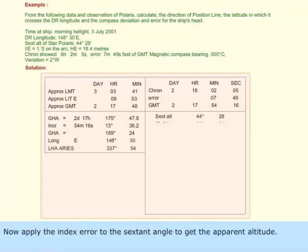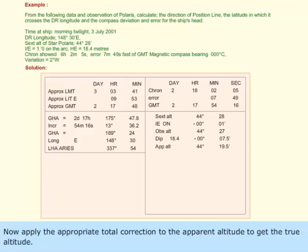Apply the index error to the sextant angle to get the apparent altitude. Then apply the appropriate total correction to the apparent altitude to get the true altitude.